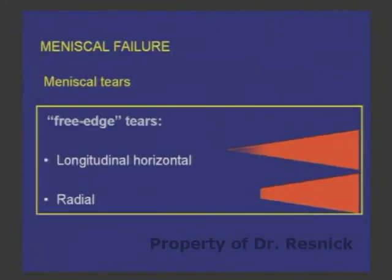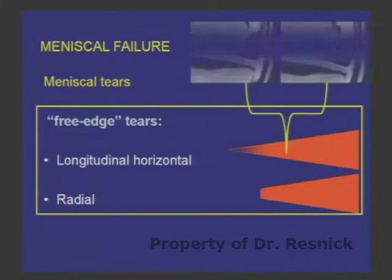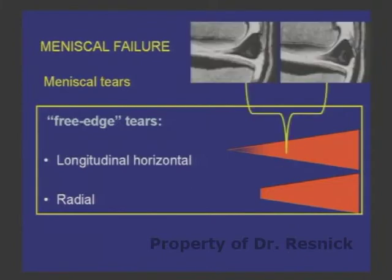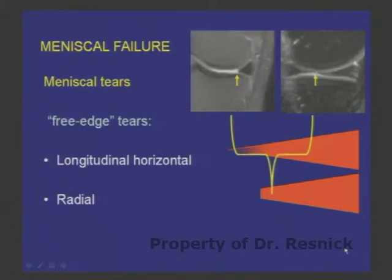Free-edge tears refer to tearing of the inner margin. They can be longitudinal, horizontal, or radial. The longitudinal horizontal type tends to have a fuzzy inner margin, while radial tears — even when small — have a sharp, truncated margin.